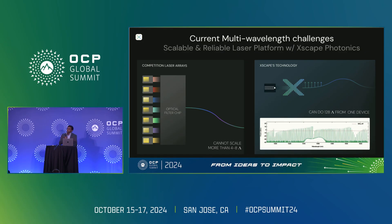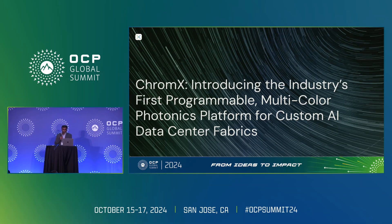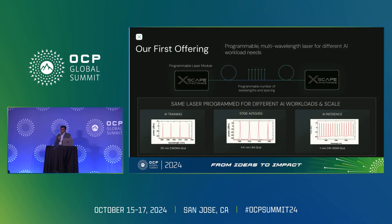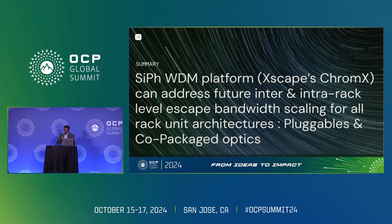At Xscape, we take one laser and one chip and generate hundreds of wavelengths — and that's what we're introducing at OCP: the industry's first programmable multicolor photonics platform for different use cases within AI data center fabrics. This is our first product — an actual device you can see at our booth, measure the laser spectrum, visit our lab, and get samples. It's one laser generating multiple colors, anywhere from 4 to 16, programmable in terms of number, spacing, and power per lambda. In summary, the Xscape ChromeX photonic WDM platform can address all future inter and intra-rack level Xscape bandwidth challenges.